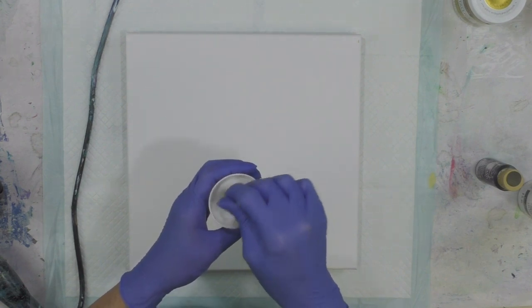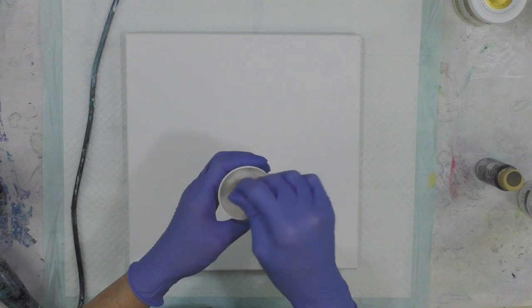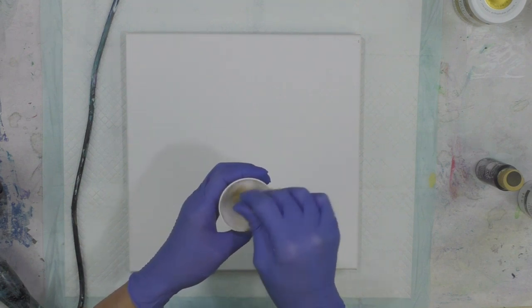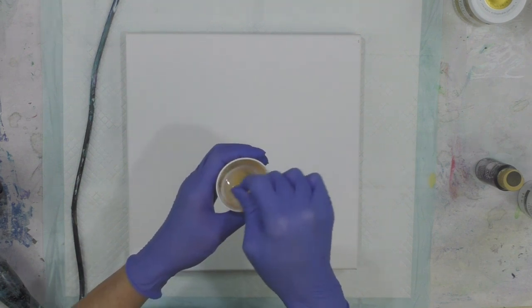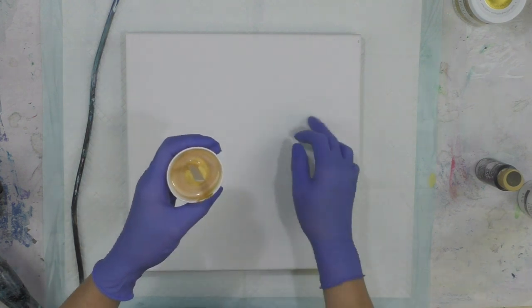This is a three-ounce bathroom cup. I've probably got about two and a half ounces of paint and Floetrol together. This is a twelve-inch canvas.